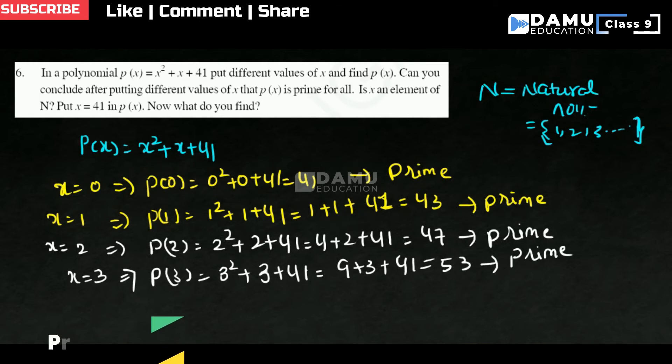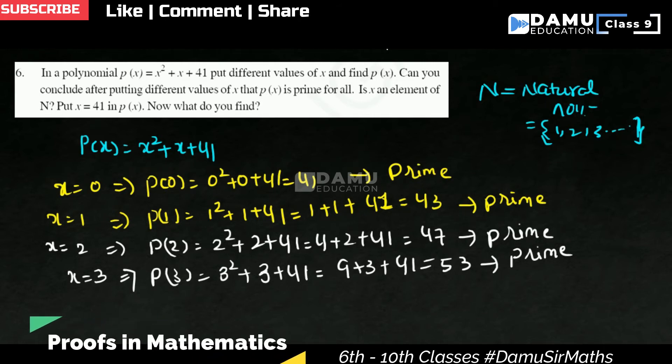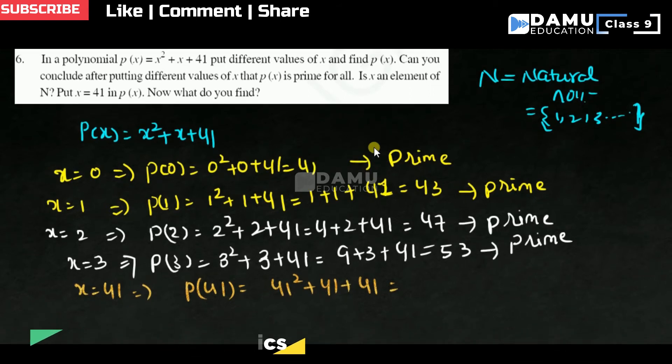Then what we have to check here. Let us substitute the value, put x equals 41. That implies P(41) will be equal to 41 square plus 41 plus 41. So 41 square, you can take one condition here. 41 is common you can take. 41 times 41 plus 41 plus 41. So you can take common 41 here. 41 into 41 plus 1 plus 1. That is 41 into, 41 plus 2, that is 41 plus 2 will be 43.